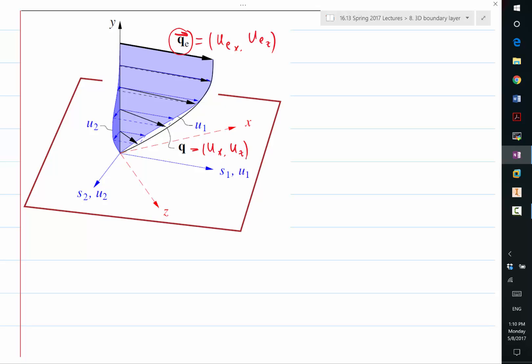That basically our thin layer assumption requires that UX and UZ is much, much greater than V, let's say, than our UI, which we define as V.